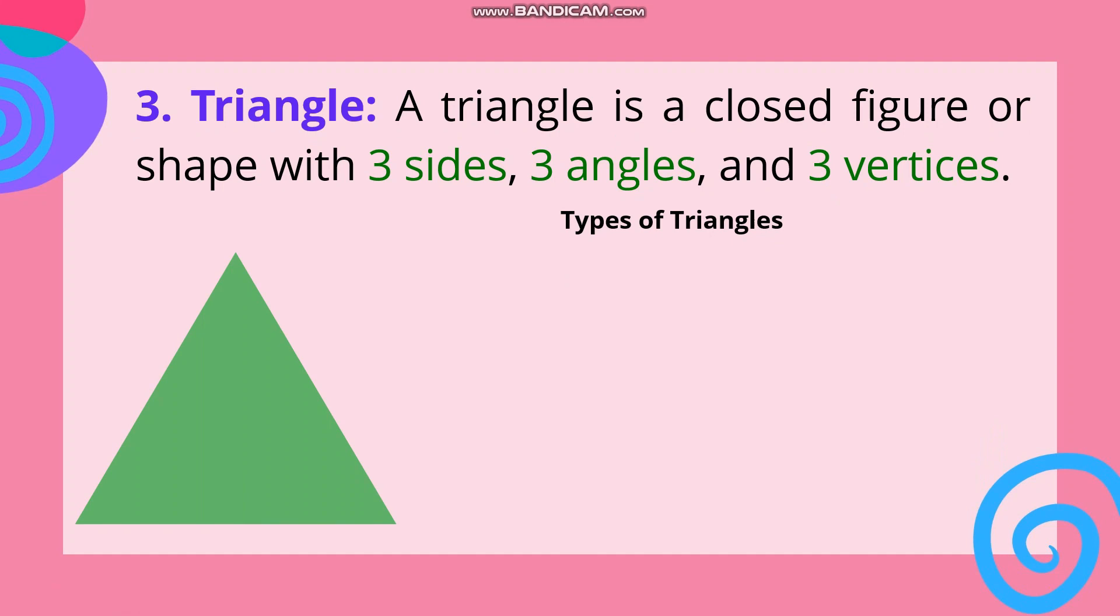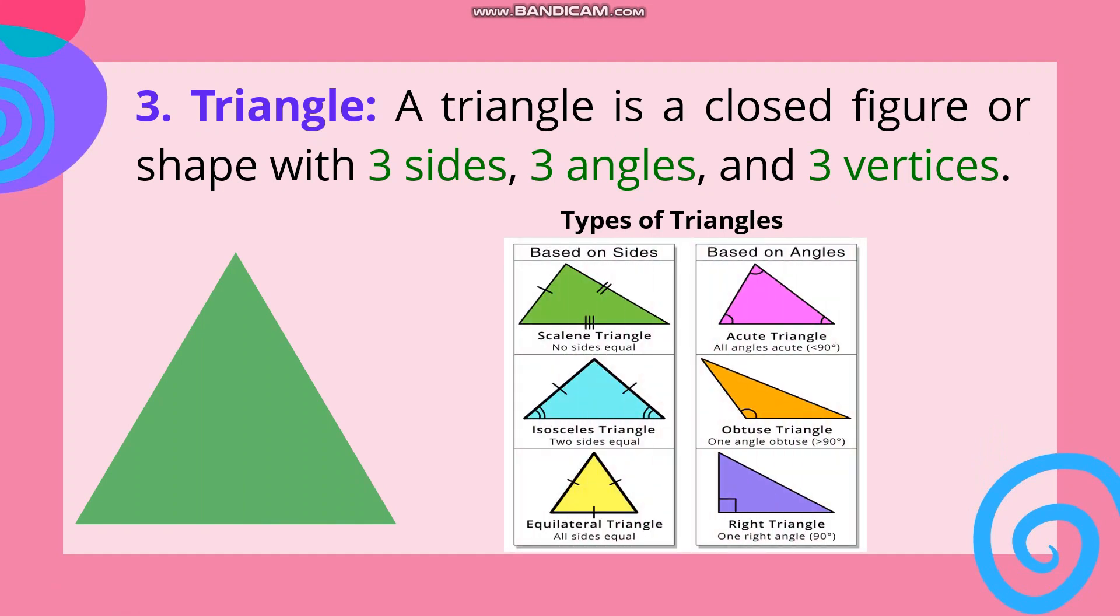Tandaan din po natin na ang triangle ay may mga classifications or types. So we have types of triangles. Based on sides: we have scalene triangle - no sides equal; isosceles triangle - two sides equal; equilateral triangle - all sides equal. Based on angles: acute triangle - all angles acute or ang kanilang sukat ay below 90 degrees; obtuse triangle - one angle is more than 90 degrees; and right triangle - one right angle or ang sukat ng isang angle ay 90 degrees.